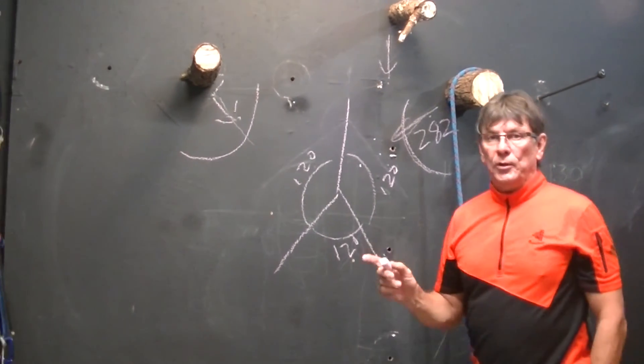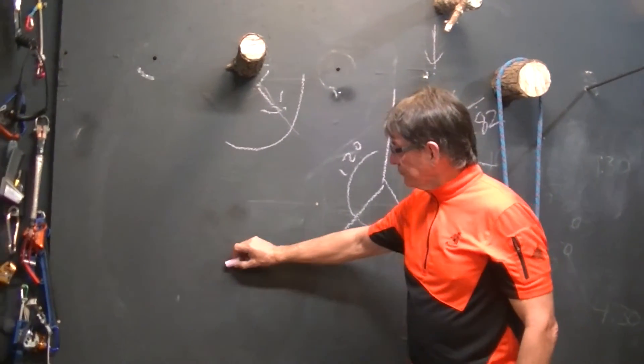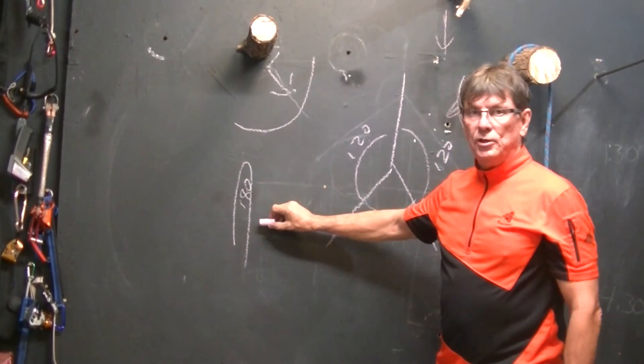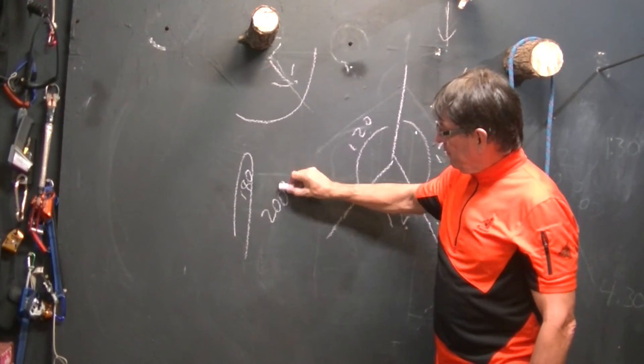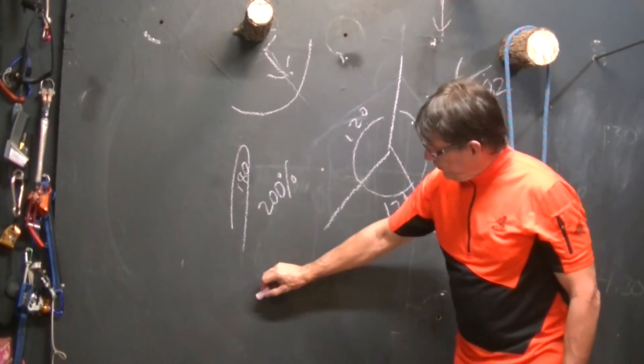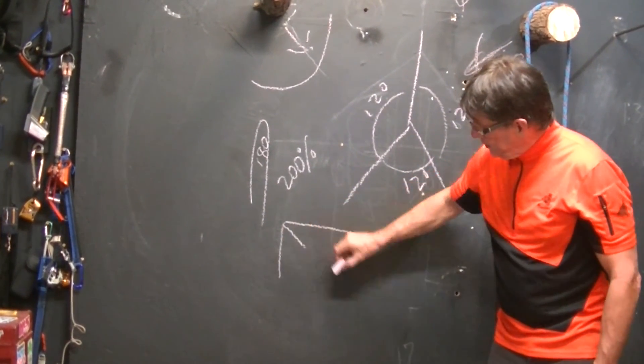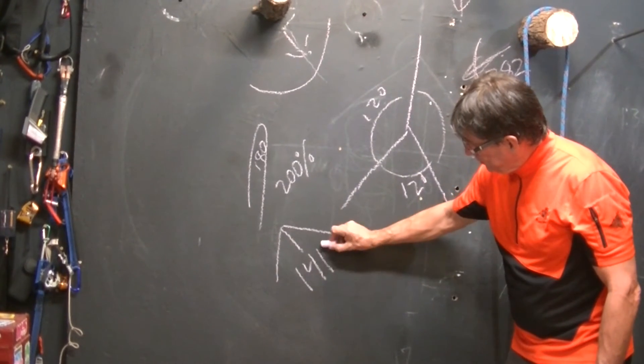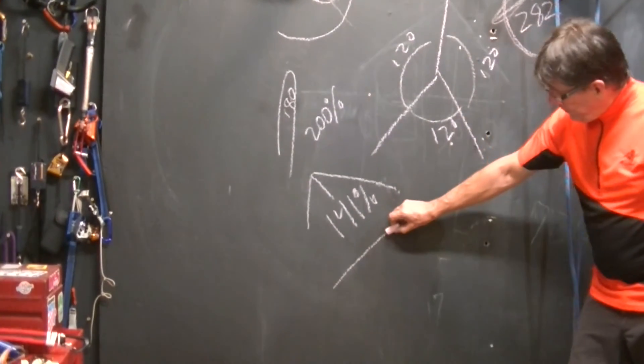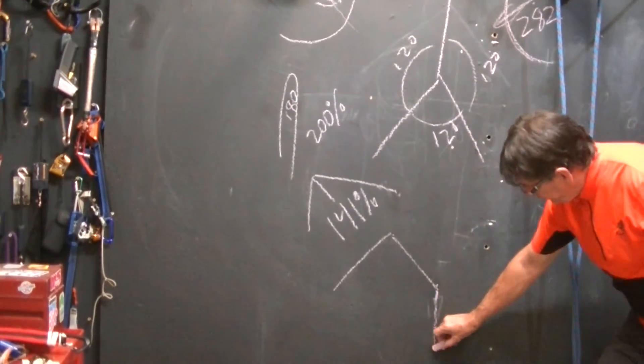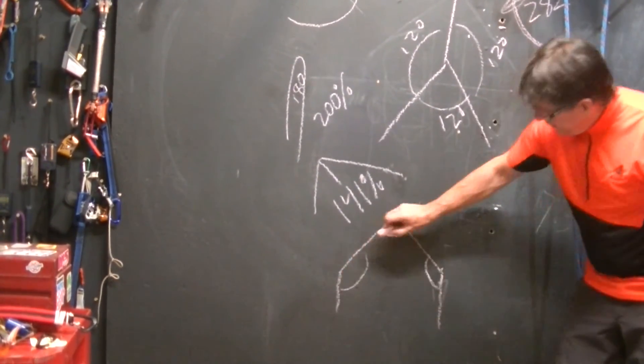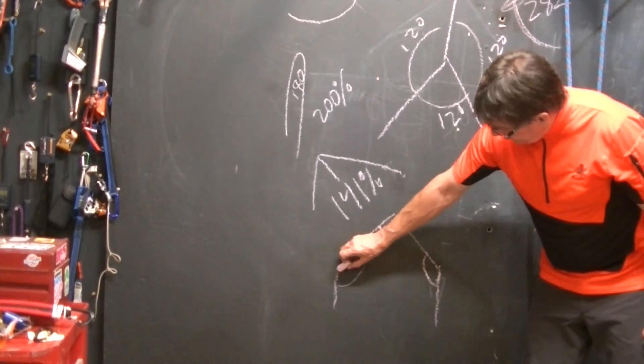So, I have a couple angles that I try to remember. Straight up and down, 180 degrees. That's 200% of my load. If I do a 90 degree change, that is 141% of my load. If I do a 120 degree change, each one of those, 120 degrees, that's a critical angle, and that's just 100%.